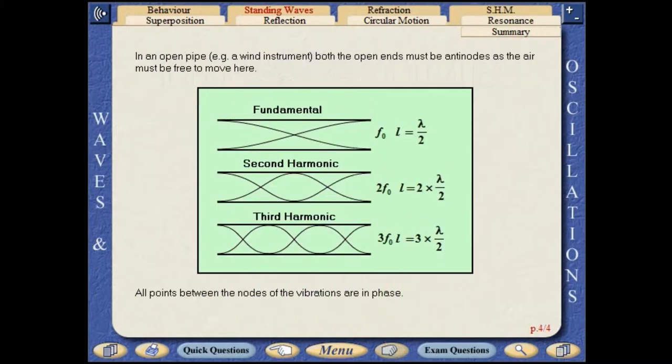In an open pipe, both the open ends must be antinodes, as the air must be free to move here. All points between the nodes of the vibrations are in phase.